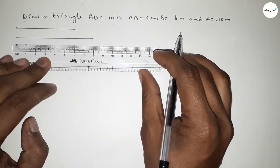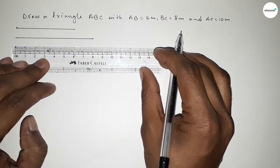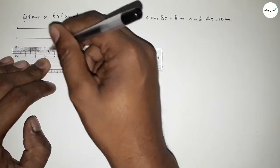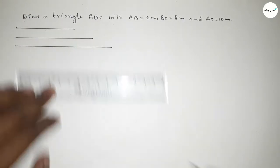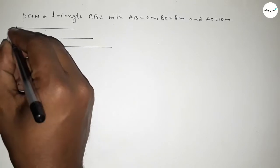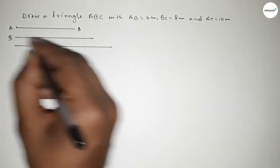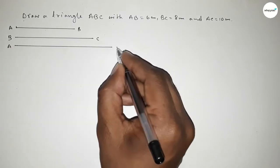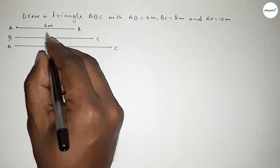And again drawing another line of length 10 centimeters — this is 0 and this is 1, 2, 3, 4, 5, 6, 7, 8, 9, 10. So this one is AB, this one is BC line, and this one is AC line — 6 centimeters, 8 centimeters, and 10 centimeters.